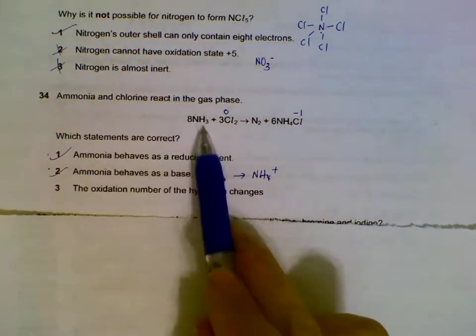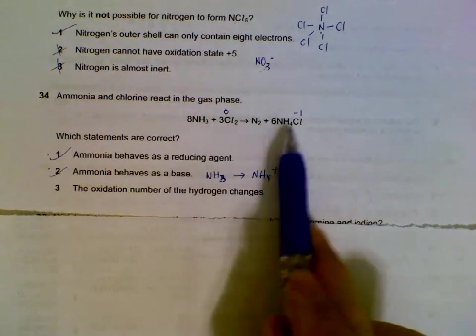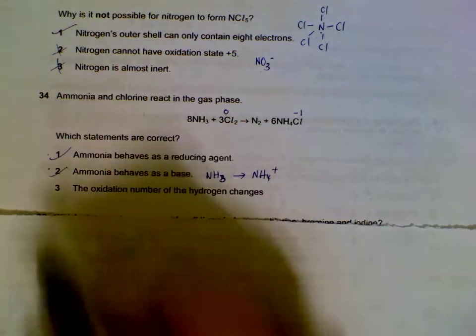Oxidation number of hydrogen is plus one before and after the reaction and doesn't change.